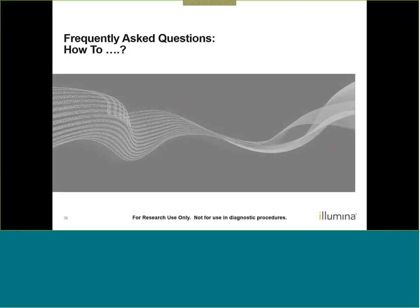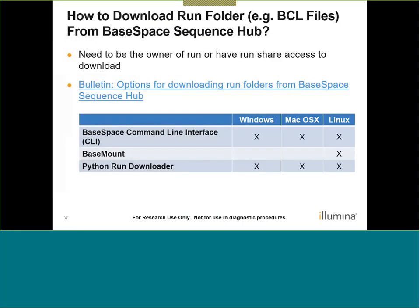How to download a run folder or BCL files from BaseSpace Sequence Hub: BaseSpace's user interface does not have an option to download an entire sequencing run folder, although it is possible to download SAV files. The user must be either the owner or have run share access. Three programs are available: BaseSpace Command Line Interface, Basemount, or Python Run Downloader. Depending on your operating system, one or all may be applicable, and a support bulletin discusses this in further detail.